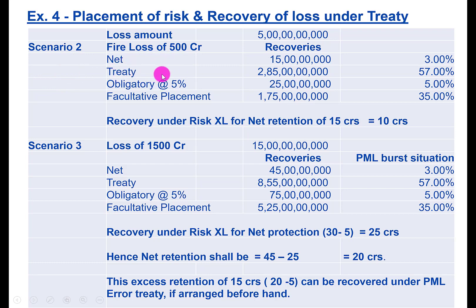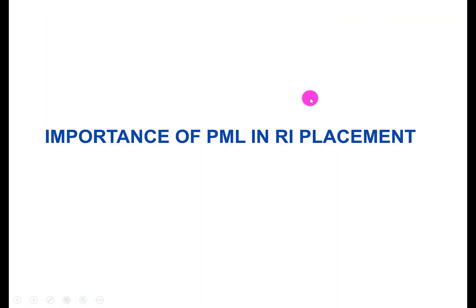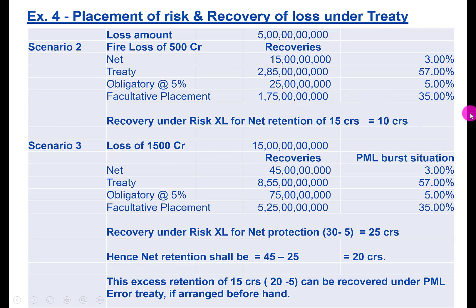In Scenario 2, assuming a fire loss of 500 crores: 3 percent net retention equals 15 crores; treaty pays 57 percent, which is 285 crores; GIC obligatory pays 5 percent, which is 25 crores; and FACA pays 35 percent, which is 175 crores. Since the net retention is 15 crores, the Risk XL treaty pays 10 crores in excess of 5 crores.